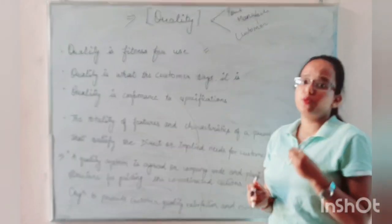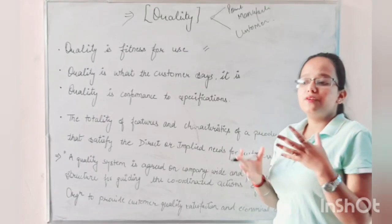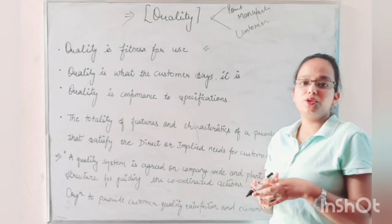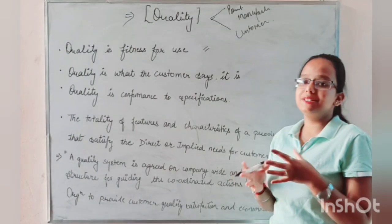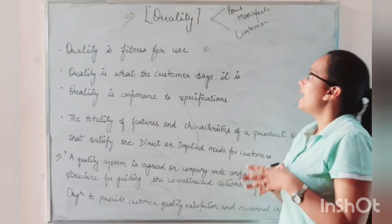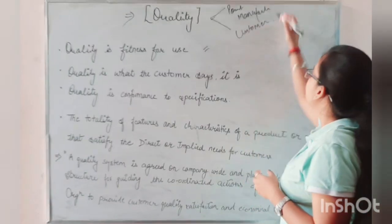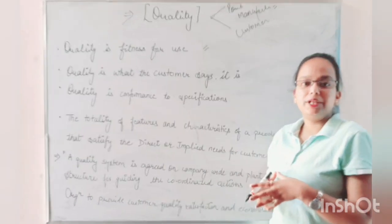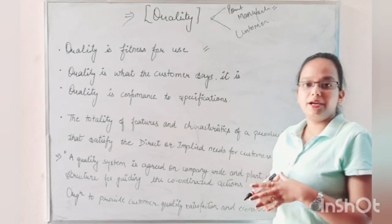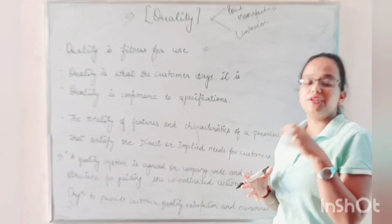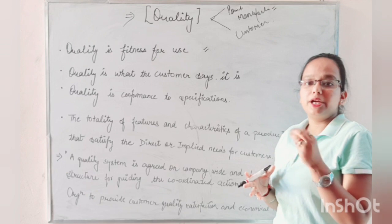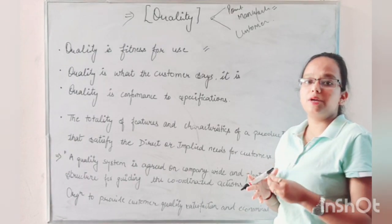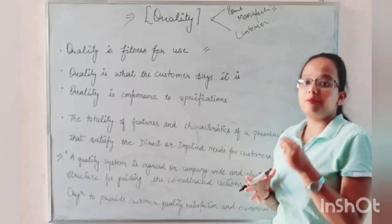From the customer's point of view, the customer's demands and requirements — if all of those are available in a particular product or service — that means they are quality oriented. From the manufacturer's point of view, quality means that the manufacturer's specific specifications, when they are met under particular conditions, then the product is quality oriented.